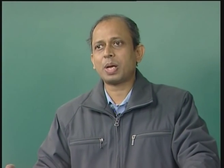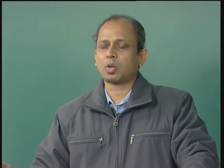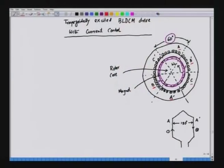Distributed windings have one advantage: the space harmonics are reduced. When we distribute the windings in space, the space harmonics of the MMF are very much reduced because they can be approximated to a trapezoidal waveform, and harmonics are less compared to a concentric winding. Here phase A and A prime each occupy 60 degrees, which is also 60 degrees electrically, because the number of poles in this case is equal to two.